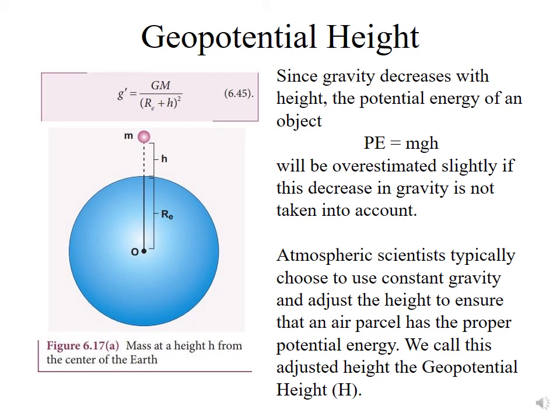So we could, as atmospheric scientists, adjust gravity with height. But what we've actually chosen to do is to use constant gravity and adjust the height definition to ensure that an air parcel has the proper potential energy. And we call this adjusted height the geopotential height. So the geopotential height does not equal the geometric height. It's actually going to typically be a little bit lower than the geometric height.